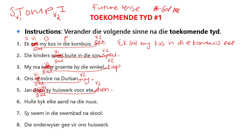'Hulle kyk elke aand na die nuus.' What is my verb? 'Kyk' is my verb. So 'kyk' becomes my verb 2 — goes to the end of the sentence. Full stop. And verb 1 becomes 'sal'. 'Hulle sal elke aand na die nuus kyk.' Easy.